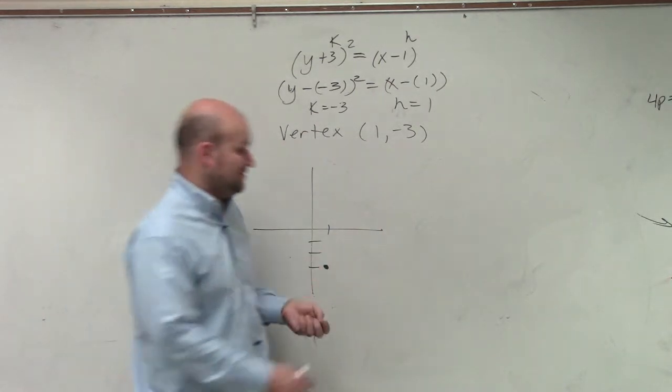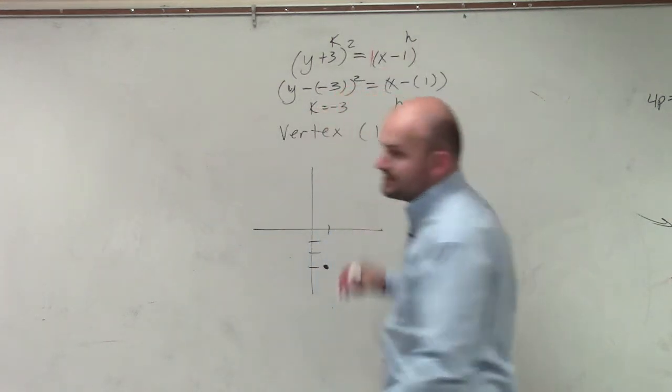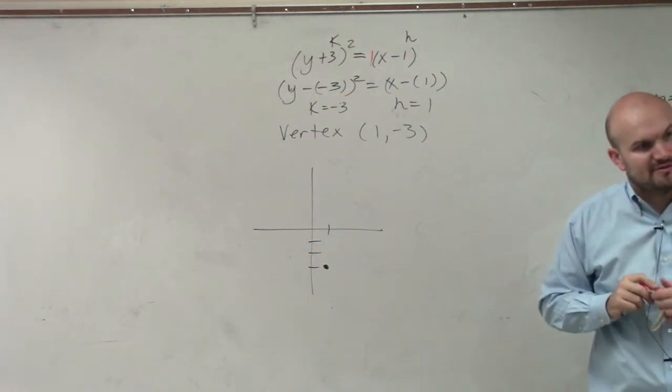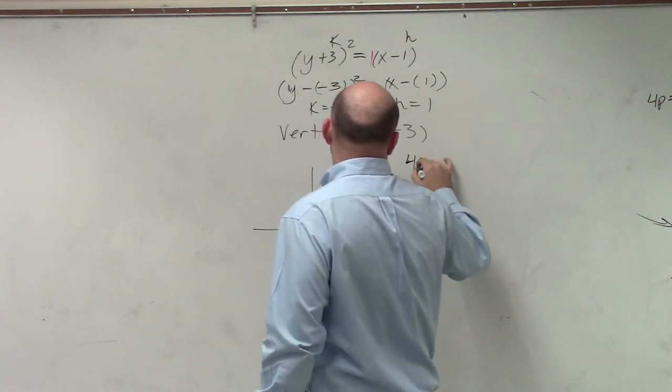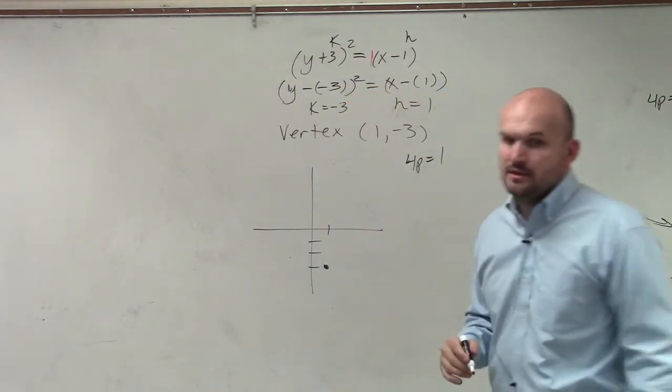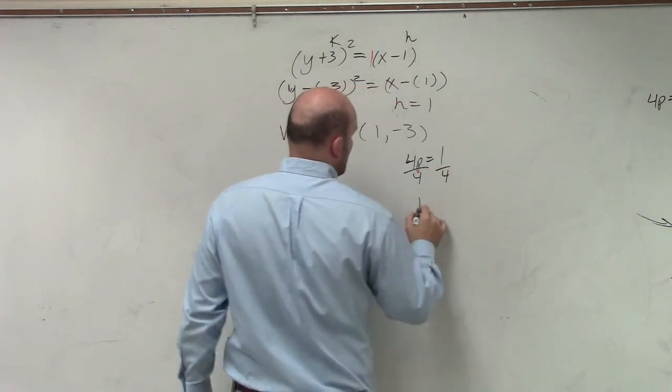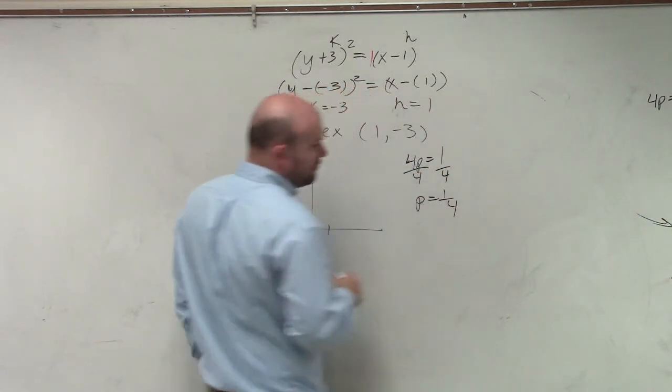Then we need to figure out our p. A lot of people say they don't see it. Well, you can always think of it being multiplied by 1. So we have 4p equals 1. Divide by 4. p equals 1 fourth.